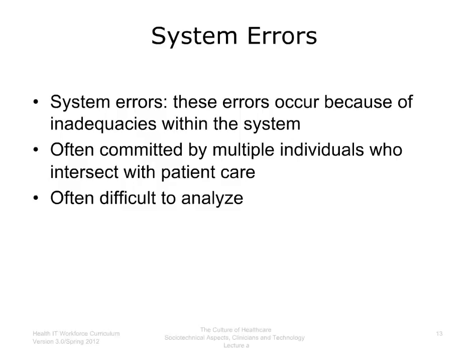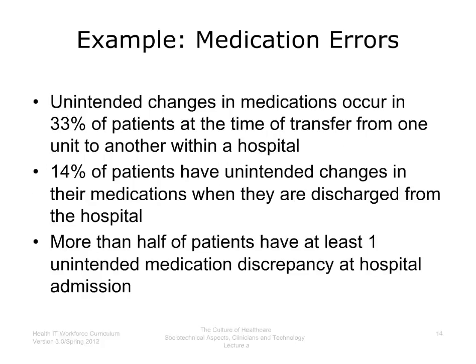In contrast to individual errors, system errors occur because of inadequacies within the system that delivers healthcare. They are often committed by multiple individuals who intersect while providing patient care within the same setting, and may occur at the same point of an individual workflow but be committed by different clinicians. These errors are often difficult to analyze. An example of system errors are medication errors. It has been estimated that unintended changes in medications occur in about one-third of all patients at the time of transfer from one unit of a hospital to another. About 14% of patients have unintended changes in their medications when discharged from the hospital, and more than half of all patients have at least one unintended medication discrepancy at hospital admission. Medication errors are therefore an enormous problem.